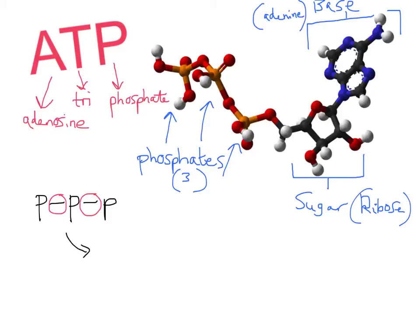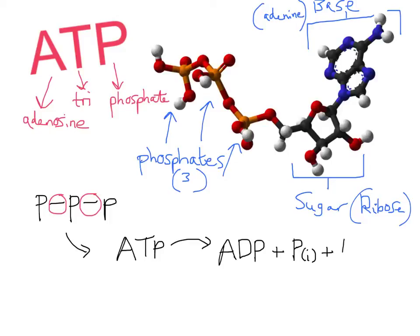We can put this into an equation. ATP can be broken down into adenosine diphosphate (ADP) — where D means di, meaning two phosphates — plus an inorganic phosphate (Pi) and energy (E). To do this, to get ATP to become ADP and Pi, we need to add water and we use an enzyme called ATPase. This whole reaction is called a hydrolysis reaction.